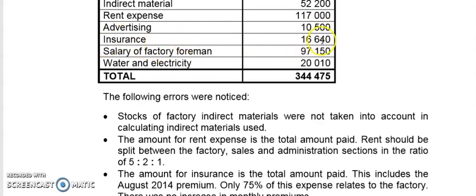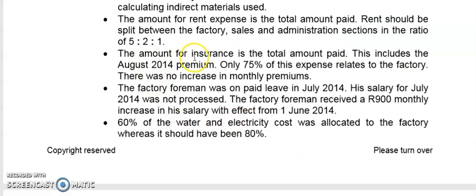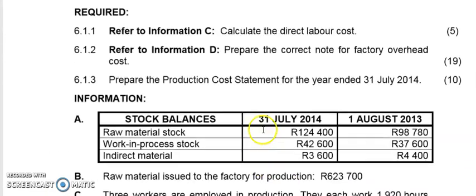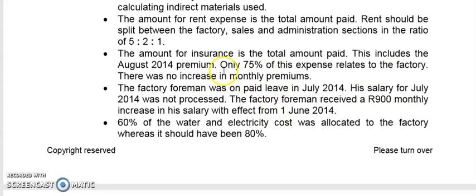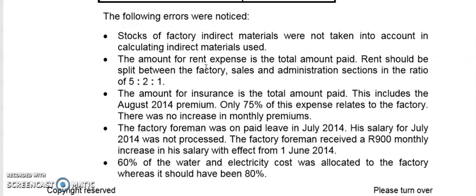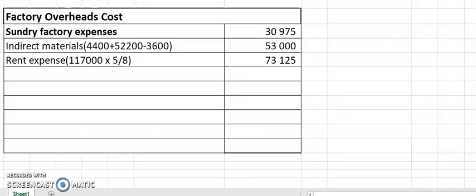Insurance — yes, it can be a factory overhead. If I read the insurance situation: the amount for insurance is the total amount paid, but this includes the August 2014 premium. Our financial year ends on 31st July. August is the month after, which means we paid for 13 months — one month extra. Whenever it's paid in advance, we take it out because we only want 12 months. So you go to 16,640 divided by 13 to get the monthly premium. Because it's 13 months, you take one month out of the 16,640 to get the total insurance for the year.